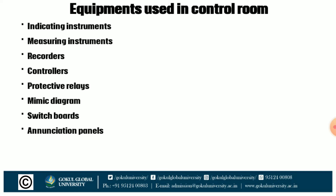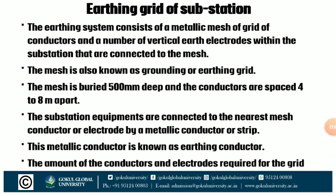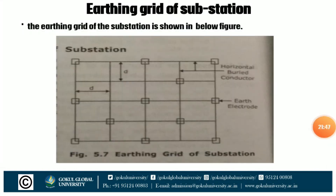Now we discuss about the earthing grid of the substation. The earthing system consists of a metallic mass of grid conductors and a number of vertical earth electrodes within the substation connected to the mass, also known as the grounding or earthing grid. The mass is buried 500 mm deep and conductors are spaced 4 to 8 meters apart. Substation equipment are connected to the nearest mass conductor or electrode by a metallic conductor called the earthing conductor.